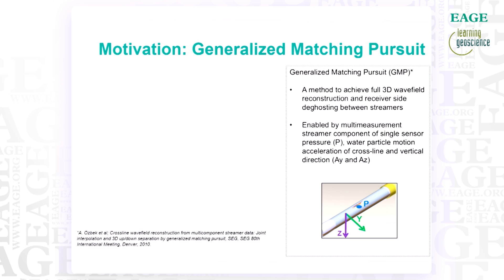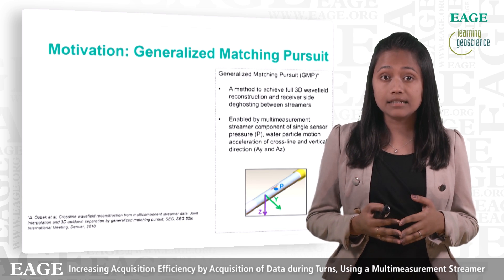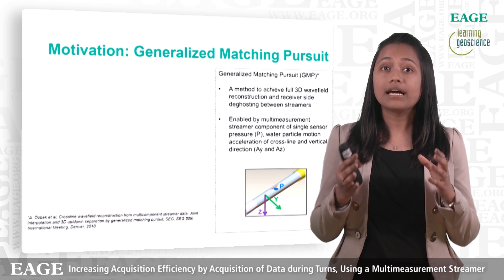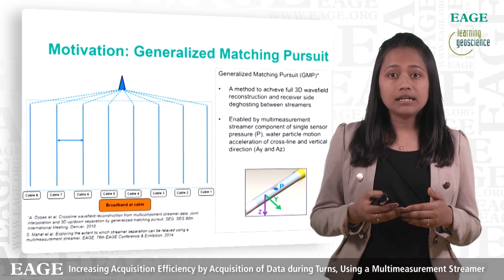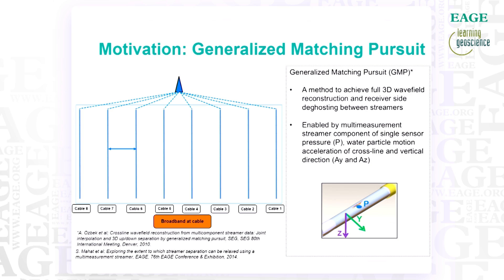In 2010, Özbek et al. showed that we can use multi-measurement streamers, which provides pressure as well as both vertical and cross-line pressure gradients, with the Generalized Matching Pursuit or GMP technique to resolve the compromise with respect to cross-line spacing and streamer separation by reconstruction of the wave field. Following on from this, Mahat et al. in 2014 showed that we can increase the streamer separation in conjunction with this GMP technique to further increase efficiency. In both of the above papers, the reconstruction of the data between the streamers and the quality of that reconstructed data was of prime consideration.